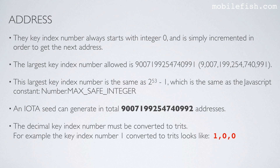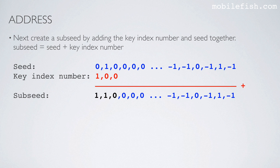The decimal key index number must be converted to trites. For example, key index number 1 converted to trites looks like 1, 0, 0. Next, create a sub-seed by adding the key index number and seed together. This is the seed in trites — I only show the first 6 and the last 6 trites. This is the key index number in trites. If you add these 2 values together you get the sub-seed.